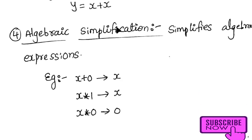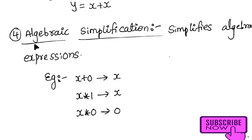The fourth type is algebraic simplification. Here, algebraic expressions are simplified. For example: instead of x + 0, we write x; instead of x * 1, we write x; instead of x * 0, we write 0. These algebraic identities simplify the expressions without changing program behavior.